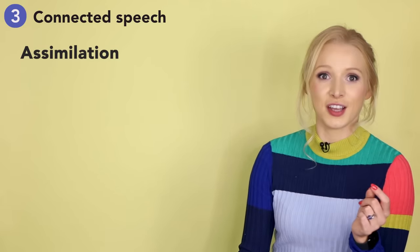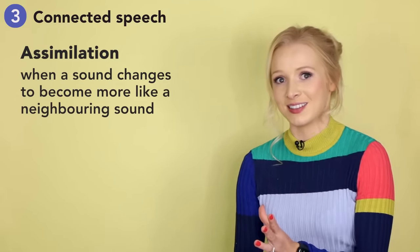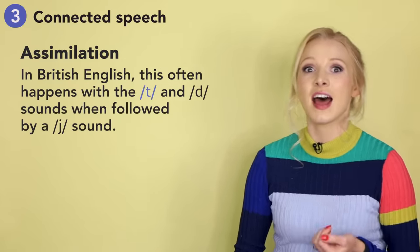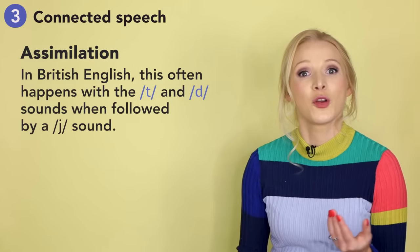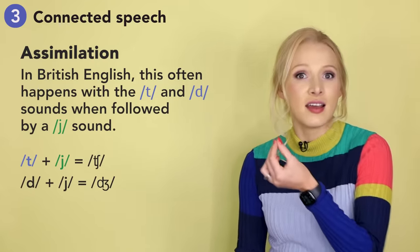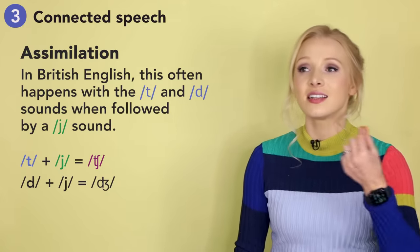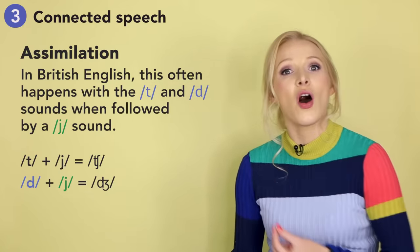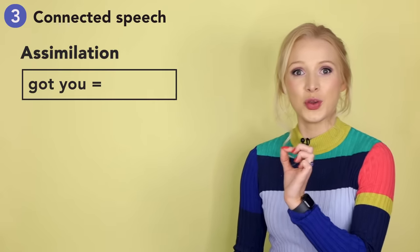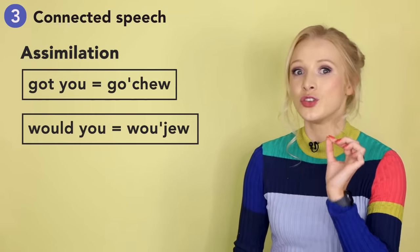Assimilation occurs when a sound changes to become more like a neighbouring sound. In British English, this often happens with the t and d sounds when followed by a y sound. T and y often sounds like 'ch,' and d and y often sounds like 'j.' For example, 'got you' becomes 'gotcha,' and 'would you' becomes 'wouldja.'